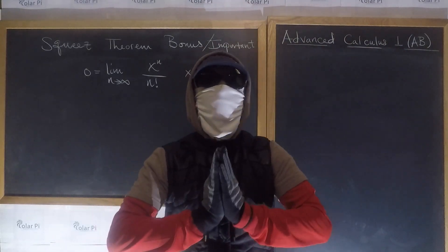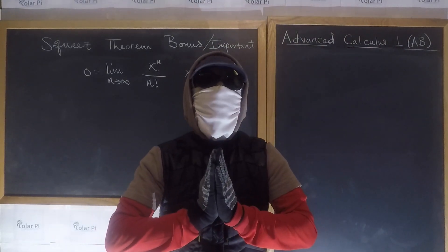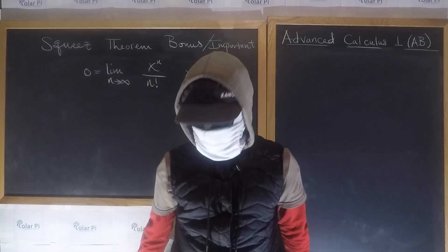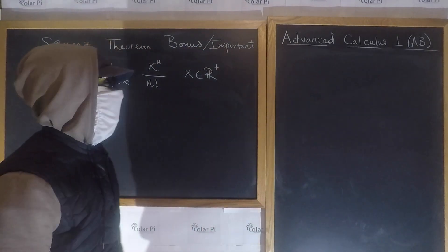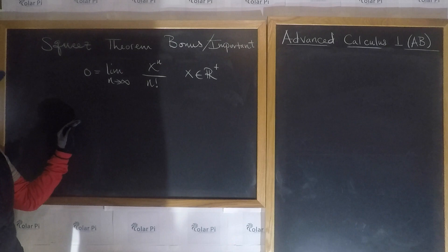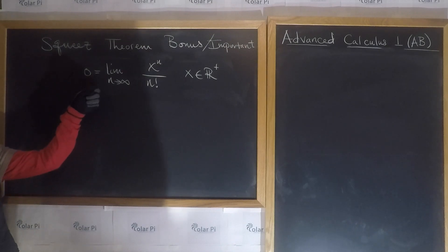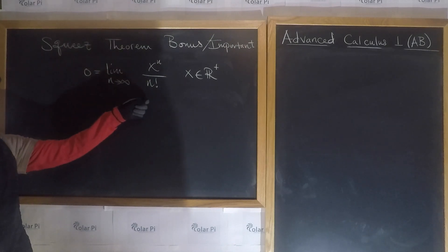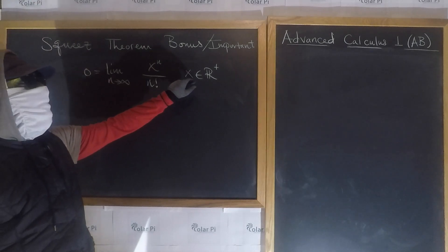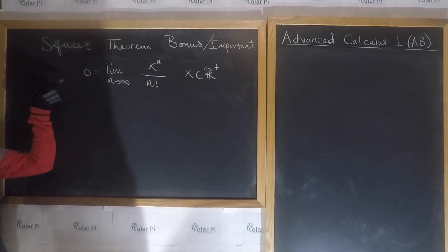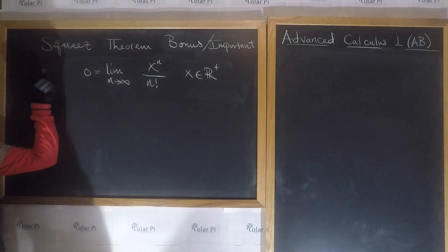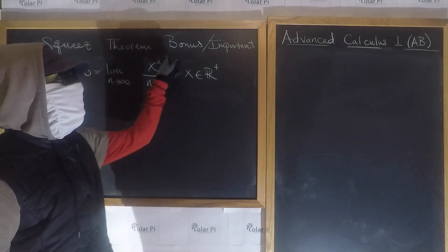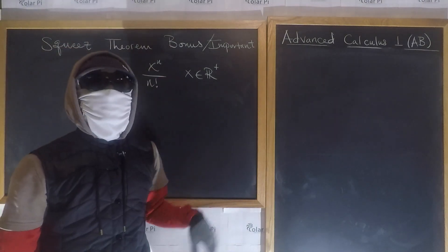Hey guys, welcome. So firstly, may the Lord Jesus Christ reign over the universe forever and ever. In this video, I'm going to show you how to prove that the limit as n goes to infinity of x to the n over n factorial, for x in the positive reals, is equal to zero. We're going to do this using the squeeze theorem, and as such, this is a bonus example on the squeeze theorem.